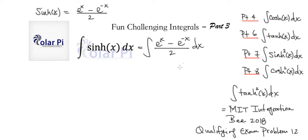First we can factor out the 1/2 and write it in front of the integral, and then we'll have e to the x minus e to the negative x dx.